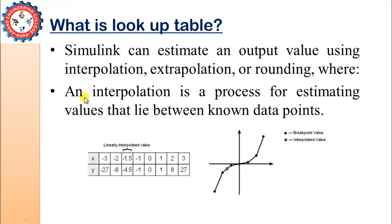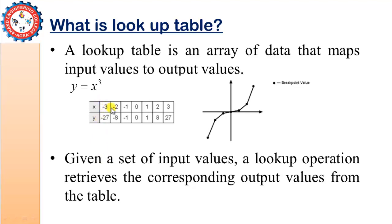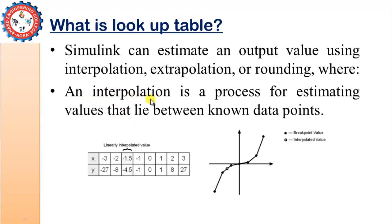Simulink can estimate output values using interpolation, extrapolation, or rounding wherever required. Interpolation is a process for estimating values that lie between known data points. In the previous table, we have data only for x = -3, -2, -1, 0, 1, 2, 3. We don't have data for -1.5 or 1.5, or any value in between. If we provide such a value to the system, the estimation of the output is known as interpolation. For example, for x = -1.5, the system will estimate the output.